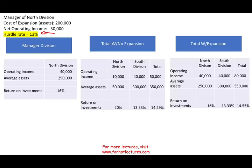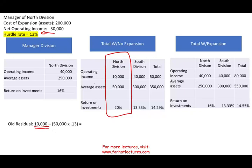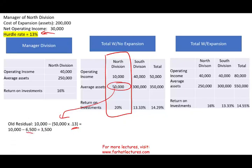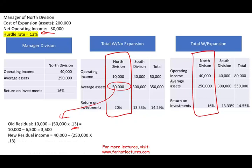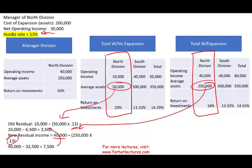Let's see how residual income overcomes the weakness of return on assets, using the same example with a hurdle rate of 13%. The old residual income (before expansion): profit of $10,000 minus $50,000 in assets times 13% equals $6,500 expected. You earned $10,000, giving a positive residual income of $3,500. Now, if you undertake the new project, your new income is $40,000 and you have $250,000 in assets times 13%, giving a new residual income of $7,500.